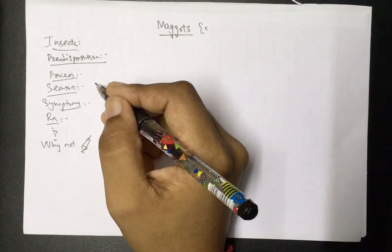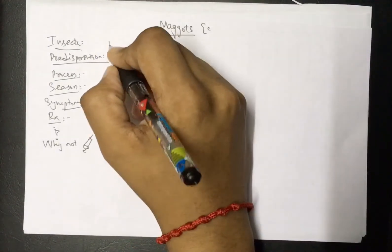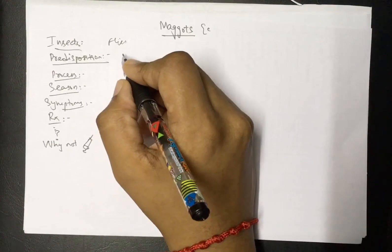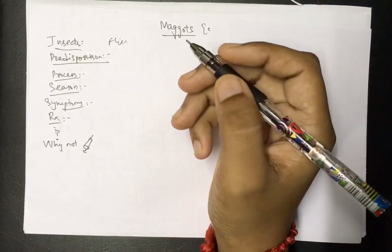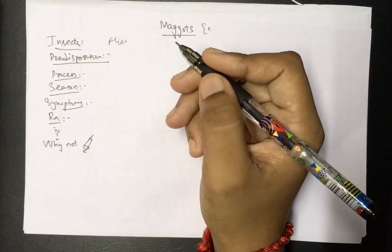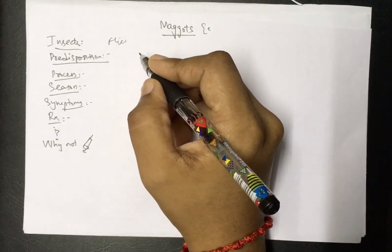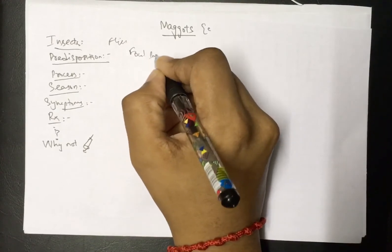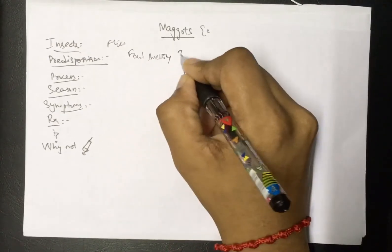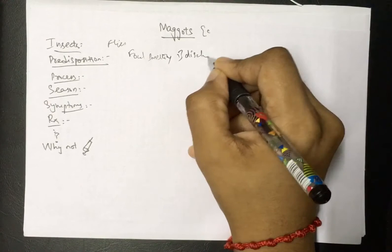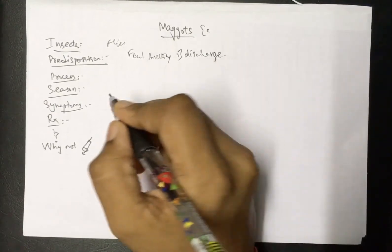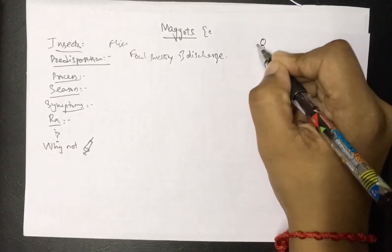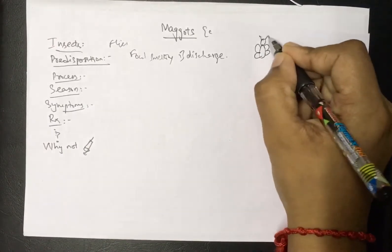The insects that cause maggots in the ear are basically flies, like house flies. The predisposing factors: flies are attracted to garbage-like smells. Not that our ear has garbage, but it has foul-smelling ear discharge. This foul-smelling discharge attracts flies and bugs.